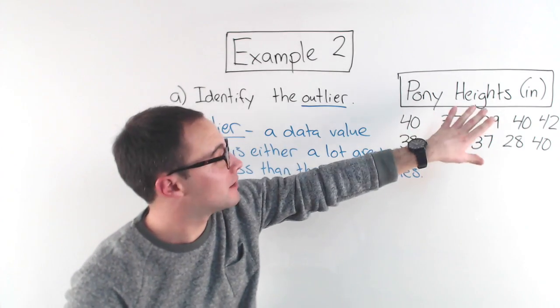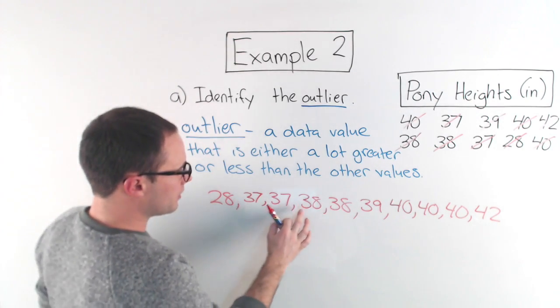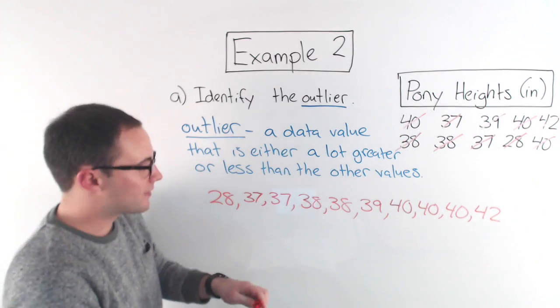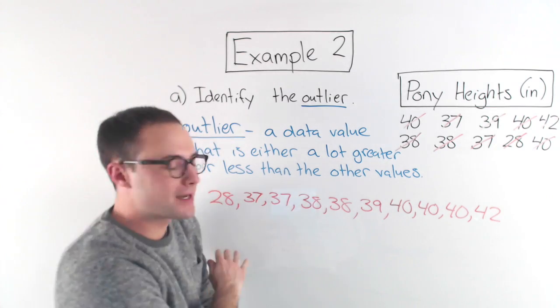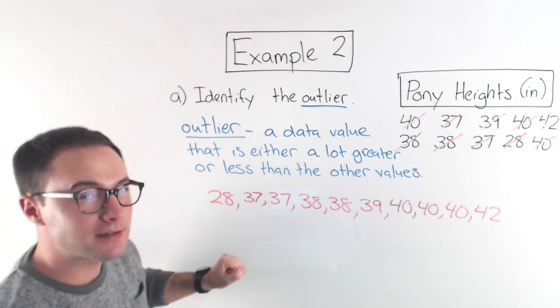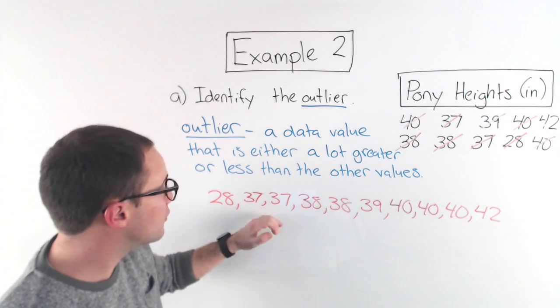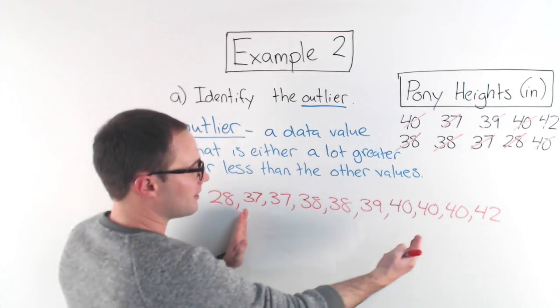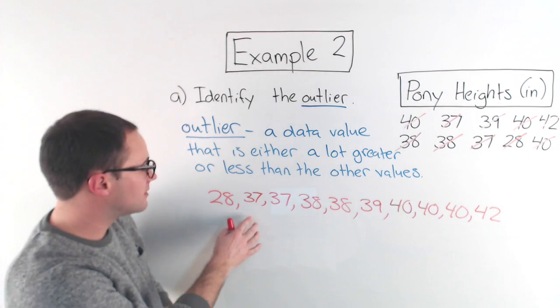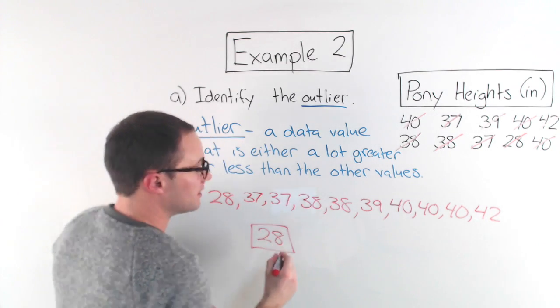So first, like always, I'm going to put my data in order and that's going to help me see if there's any outliers. Just to double check, let's count, so I've got all my data in order. Now let's take a look. If I wanted to, I could make a dot plot and that could help me see if there's any outliers. But hopefully, looking here, it should be obvious. Can you see what the outlier is? Well, if you notice, we go from 28 all the way up to 37, 37, 38, 39, 40, 42. Here, the data is all clustered pretty close together, except the 28. The 28 is quite a bit less than all the other values, which means my outlier is 28.